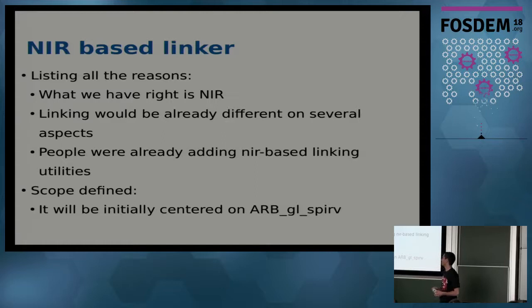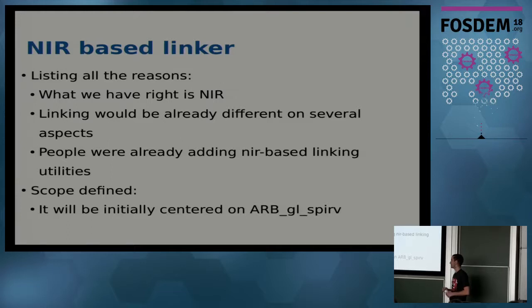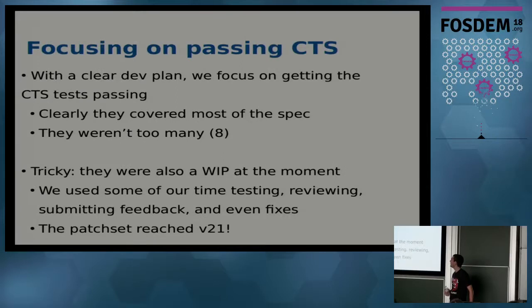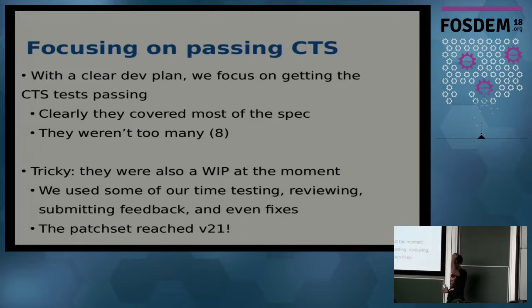So we decided to switch to a NIR-based linker. The scope is actually well-defined because GL_ARB_GL_SPIRV doesn't include all the features the current GLSL linker needs to support — GLSL has been around since 2004, so the Mesa linker supports features spanning more than ten years. Our clear plan was rewriting everything based on the NIR linker and focusing on getting the CTS tests passing. Those tests covered most of the spec — especially corner cases around mappings — and there weren't too many of them.